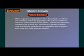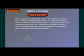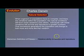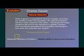We can condense and summarize natural selection: when organisms and populations have to compete and there are variations within the population, the natural conditions will favor some variations over others. Individuals with these variations will survive and reproduce in greater numbers, and over successive generations the population will change to look more and more like that variation. Darwin described organisms as having fitness — the relative ability to survive and reproduce — so that you could pass those traits along. Sometimes we call this survival of the fittest.